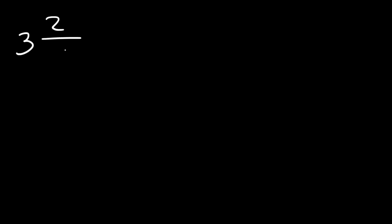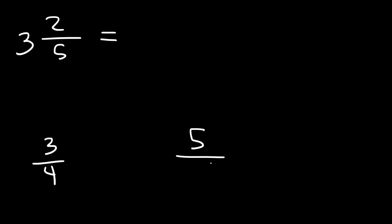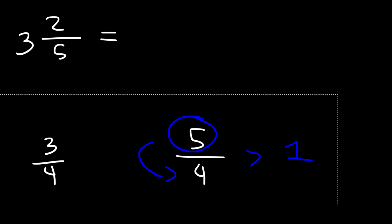When dealing with mixed numbers, you need to know how to convert a mixed number into an improper fraction. Consider the example three and two-fifths. An improper fraction is one where the numerator is greater than the denominator — for example, three-fourths is a proper fraction because three is less than four, but five over four is an improper fraction because the numerator is greater than the denominator.